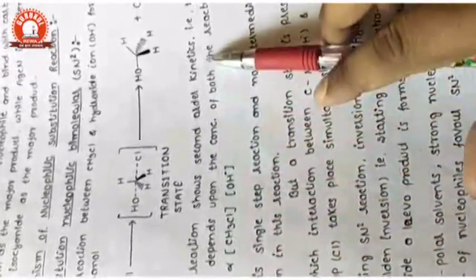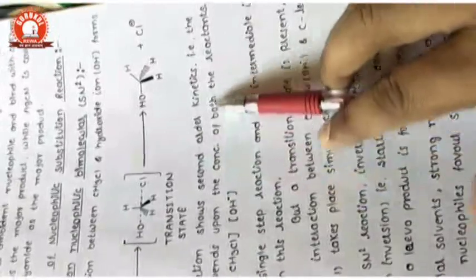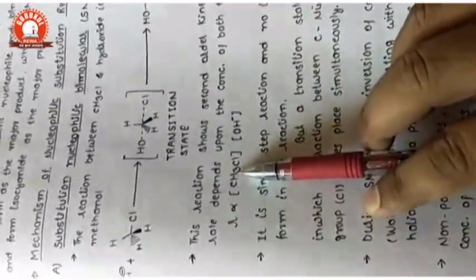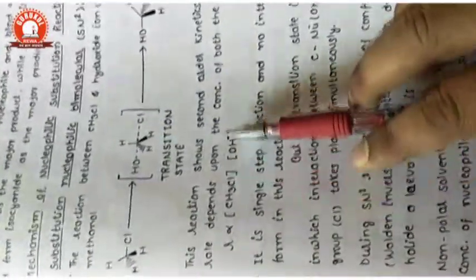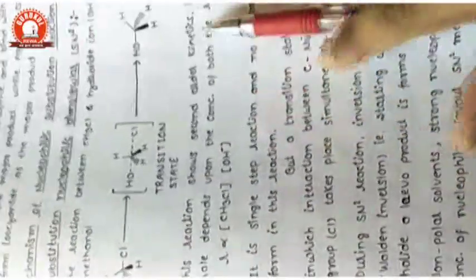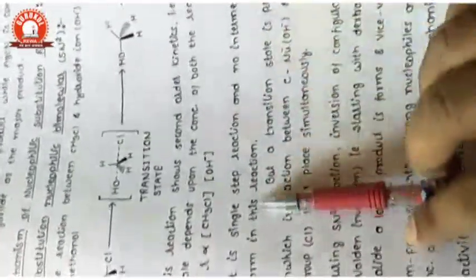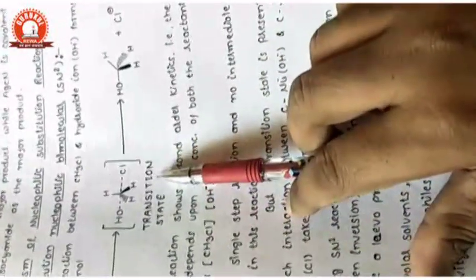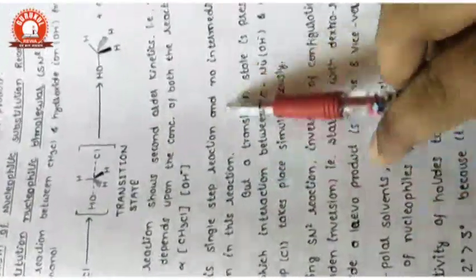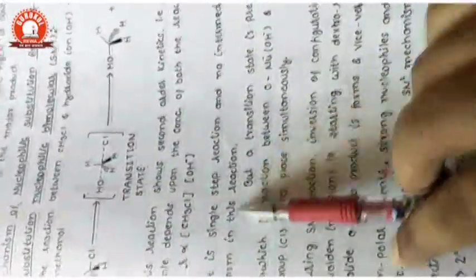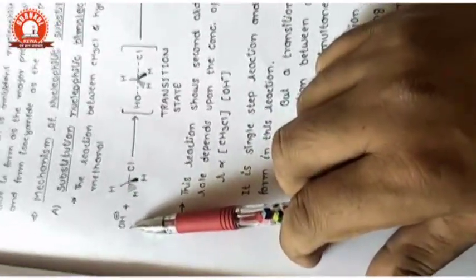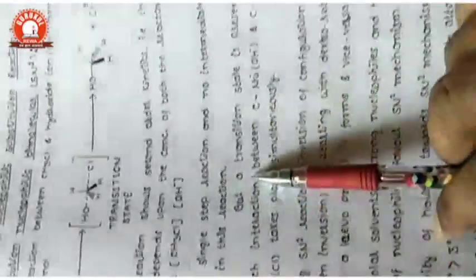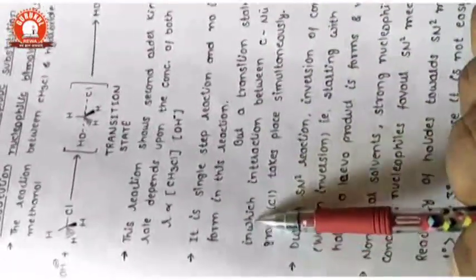According to kinetics, SN2 is second-order kinetics. The rate depends on the concentration of the haloalkane as well as the nucleophile, each with a power of one — one plus one equals two, so it is second-order. Because the reaction completes in one step, a stronger nucleophile is required with a greater concentration.